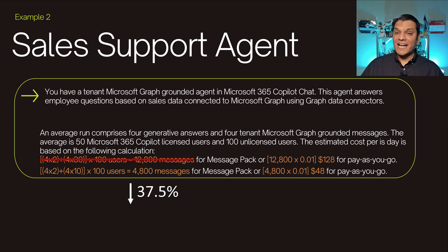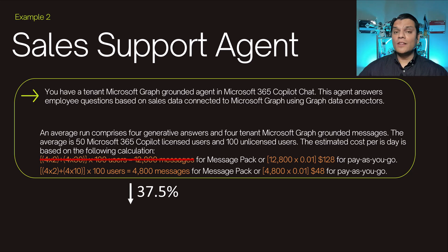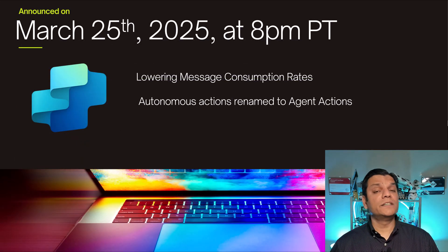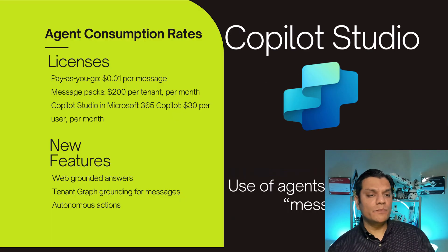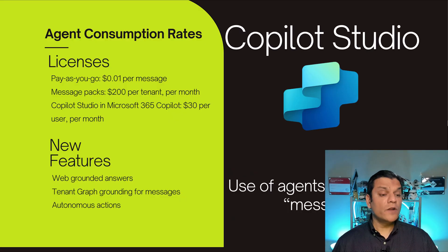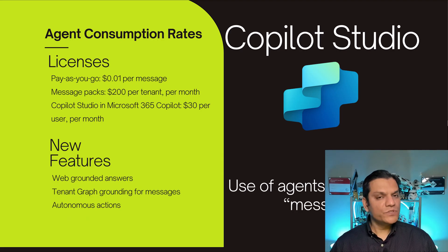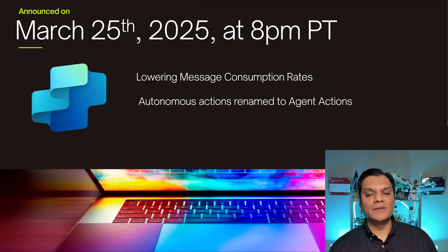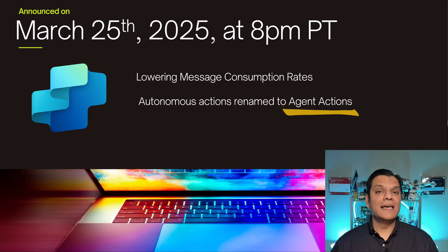The overall cost has dropped by 37.5% — that is significant, and a huge boost to the number of messages you have back in your queue. The second announcement is that Autonomous Actions is being renamed to Agent Actions. When this feature was announced back in January, the name was not sitting well, so Microsoft decided to change it to Agent Actions, which makes it much easier to understand overall.